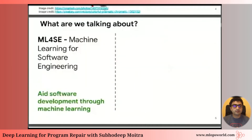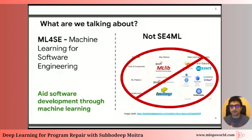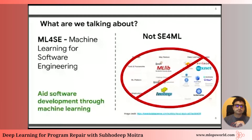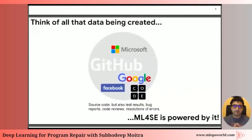What we're exactly talking about is an area of research called ML4SE — machine learning for software engineering. This area of emerging research attempts to aid software development through machine learning. It's good to clarify what it's not: it's not SE for ML, which refers to the tools, libraries, and frameworks like Spark and Apache that help with machine learning. We're talking about machine learning specifically for helping software engineering.